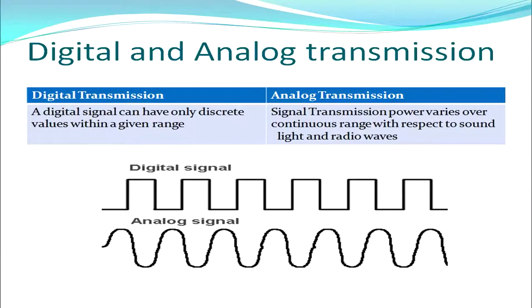Next, we move on to broadly classified transmission types: digital and analog. A digital signal can have only discrete values — 0 and 1 — with nothing in between. An analog signal, on the other hand, varies over a continuous range with respect to sound, light, radio waves, or time. Today in our computer networks, we basically follow digital transmission. A digital signal is either high or low, a 1 or a 0, while an analog signal slowly moves from 0 to 1 and vice versa.